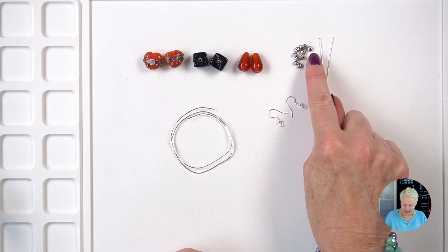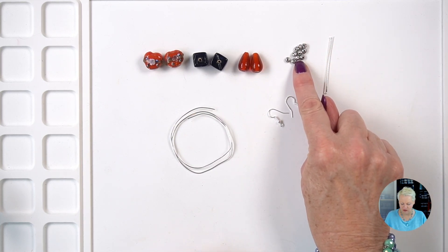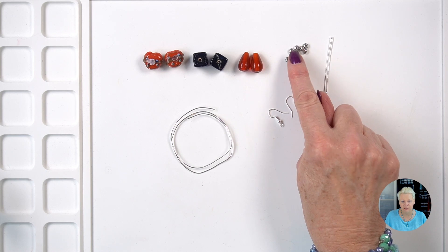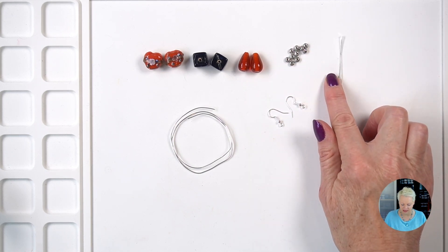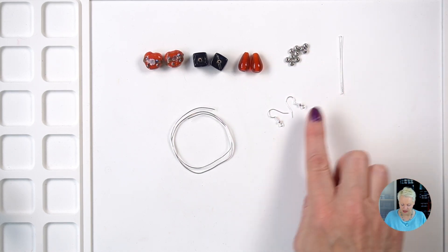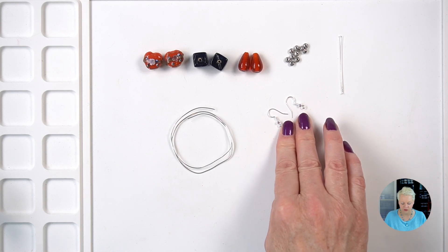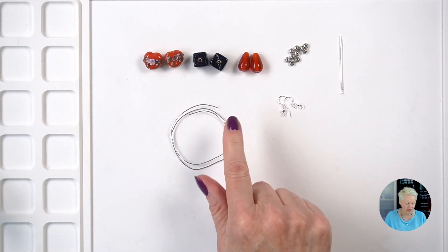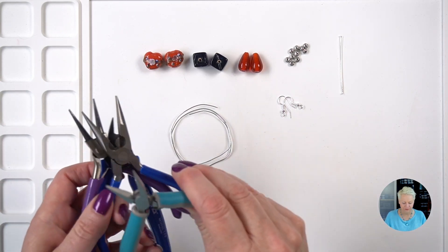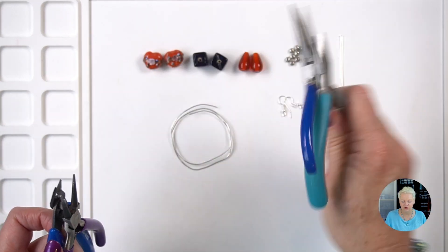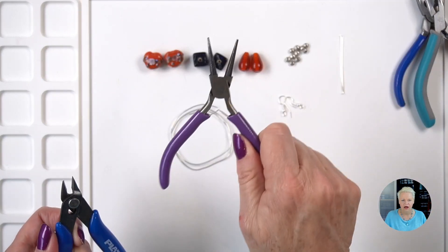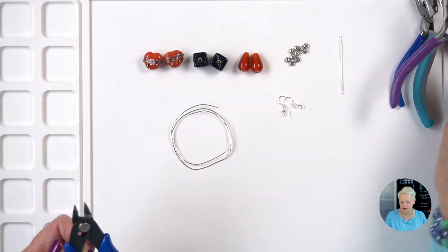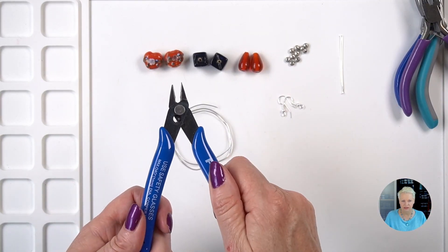As well as that I have some 5 by 3 millimeter rondelles. These are Tibetan silver. I have two head pins five centimeters long. I've got a pair of ear hooks in silver and I have some 20 gauge wire. In terms of tools I'm going to be using two pairs of chain nose pliers, a pair of round nose pliers, and some flush cutters.